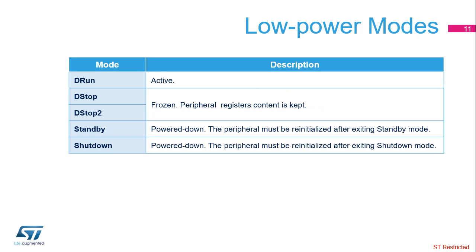The Chrome GRC is active in D-run mode. In D-stop or D-stop 2 mode, the Chrome GRC is frozen and its registers' content is maintained. In standby or shutdown mode, the Chrome GRC is powered down and must be re-initialized afterward.